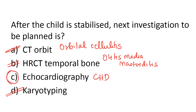The answer is option C — echocardiography. The most common cyanotic congenital heart disease associated with brain abscess is tetralogy of Fallot. Now let us understand why in tetralogy of Fallot, or with a right-to-left shunt, you get brain abscess.